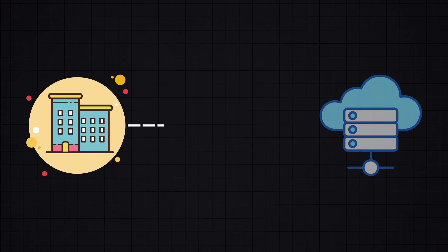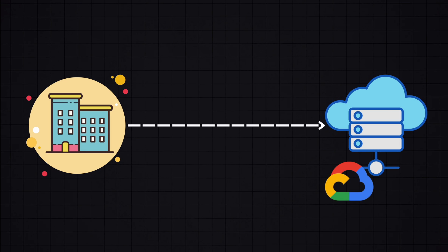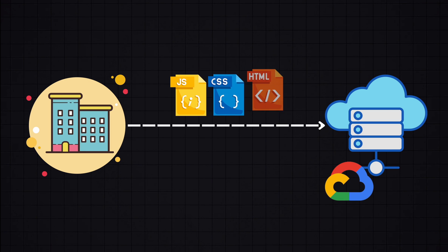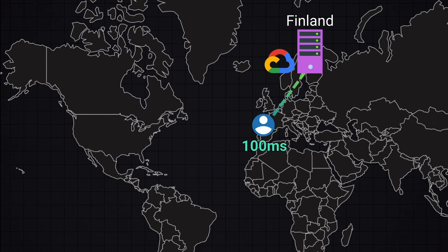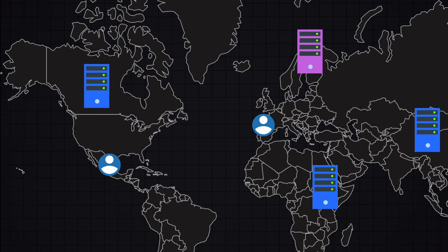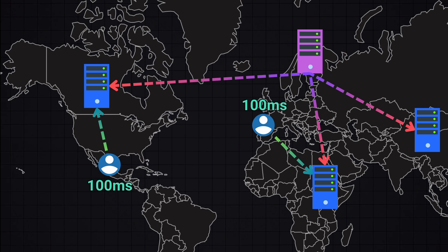Imagine a company is hosting a website on a server in a Google Cloud data center in Finland. It may take around 100 milliseconds to load for users in Europe, but it takes 3 to 5 seconds to load for users in Mexico. Fortunately, there are strategies to minimize this request latency for users who are far away.